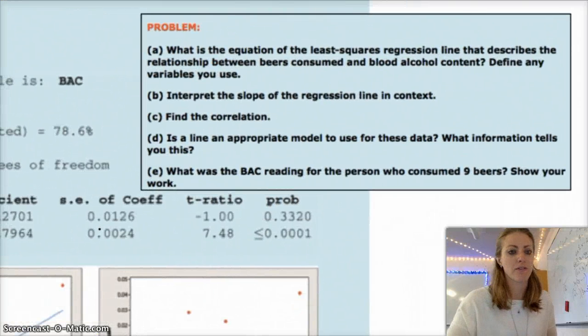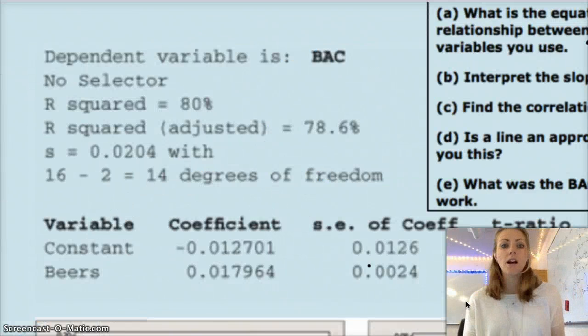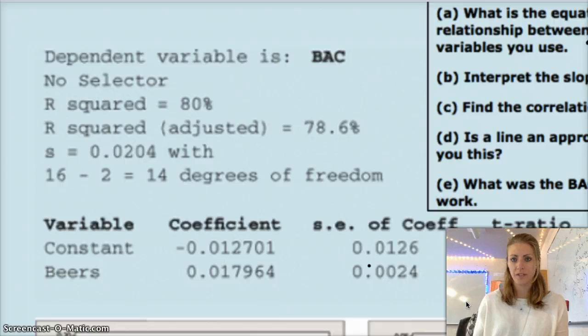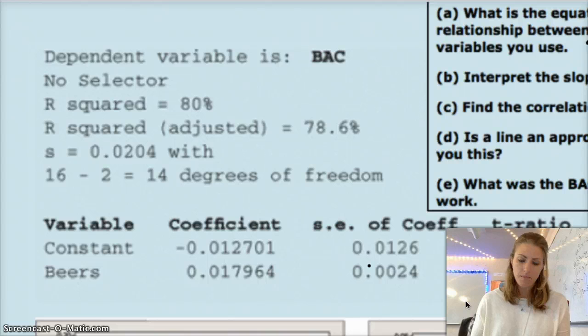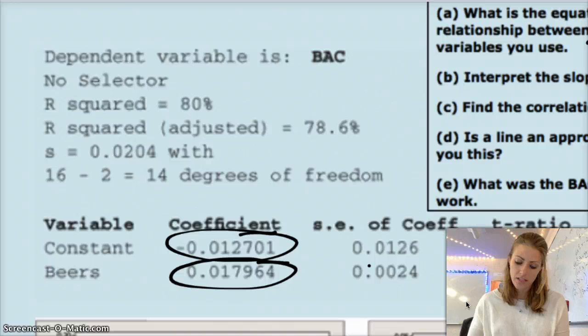Okay, so the first question is find the equation for the least-square regression line. So you need to know what the slope and the y-intercept are. If you weren't sure, rewind and watch from the beginning. But this is my slope, and this is my y-intercept.